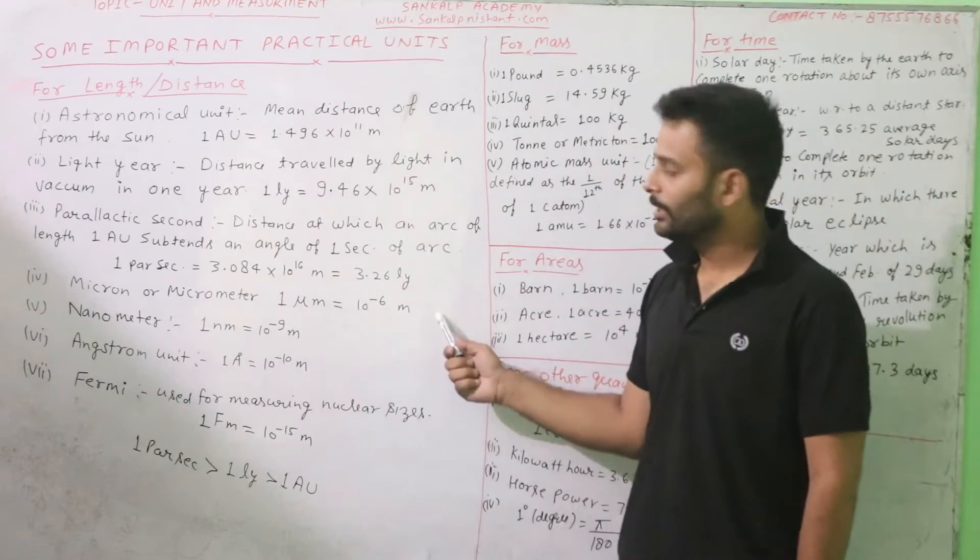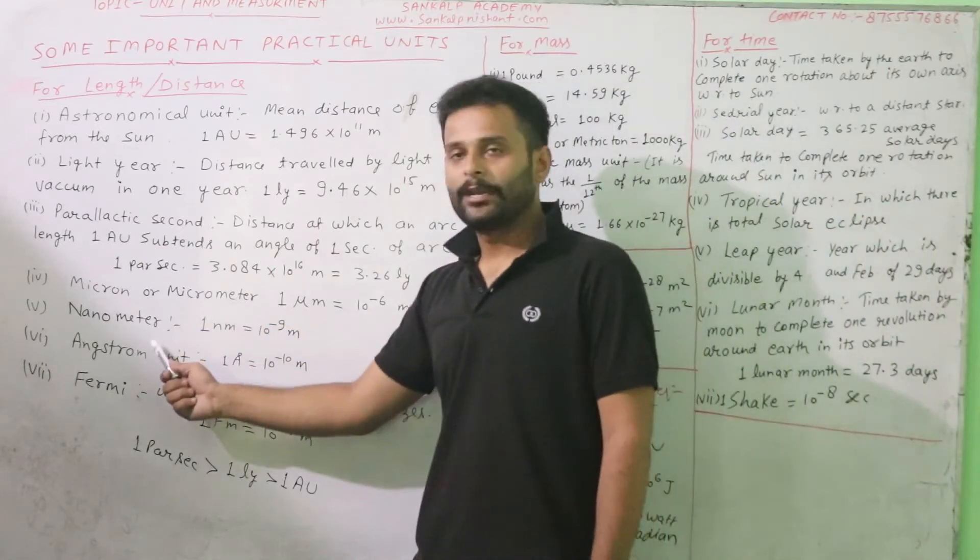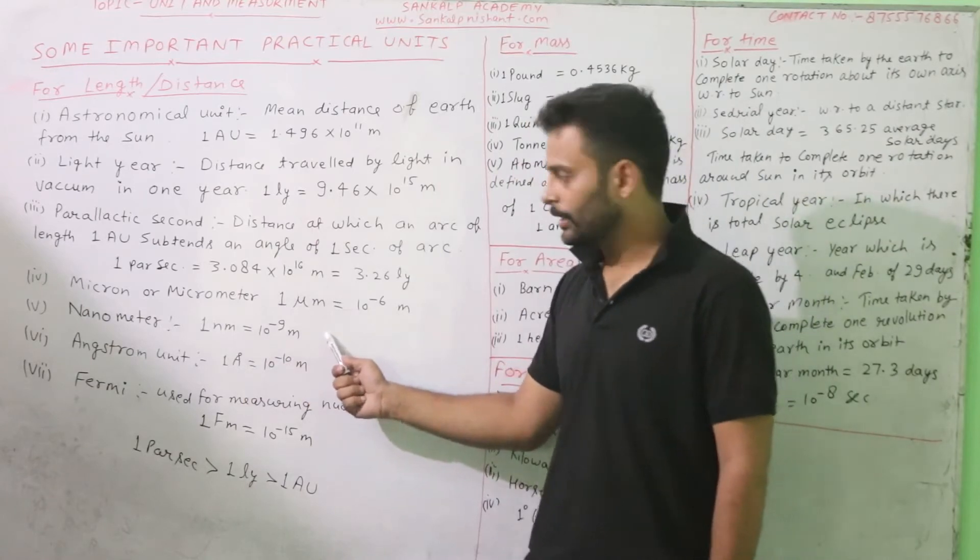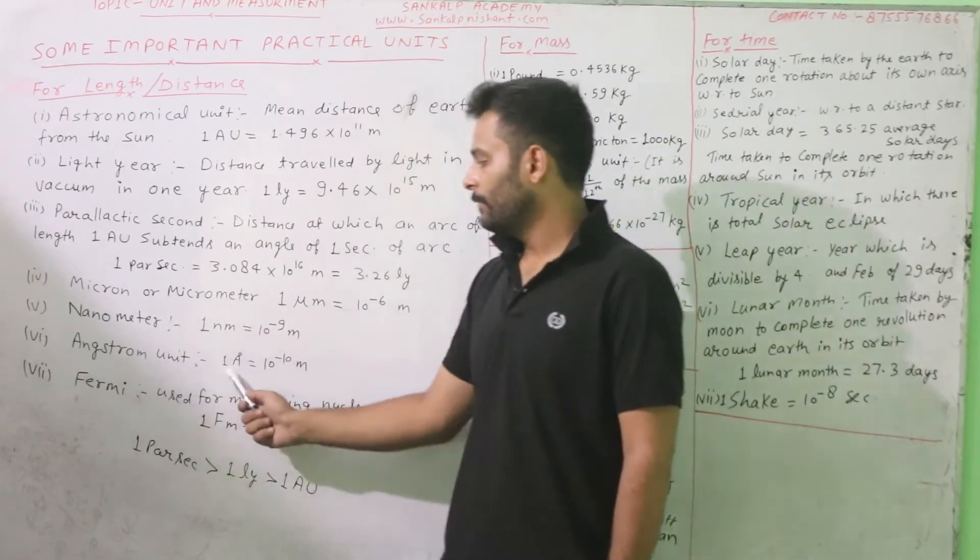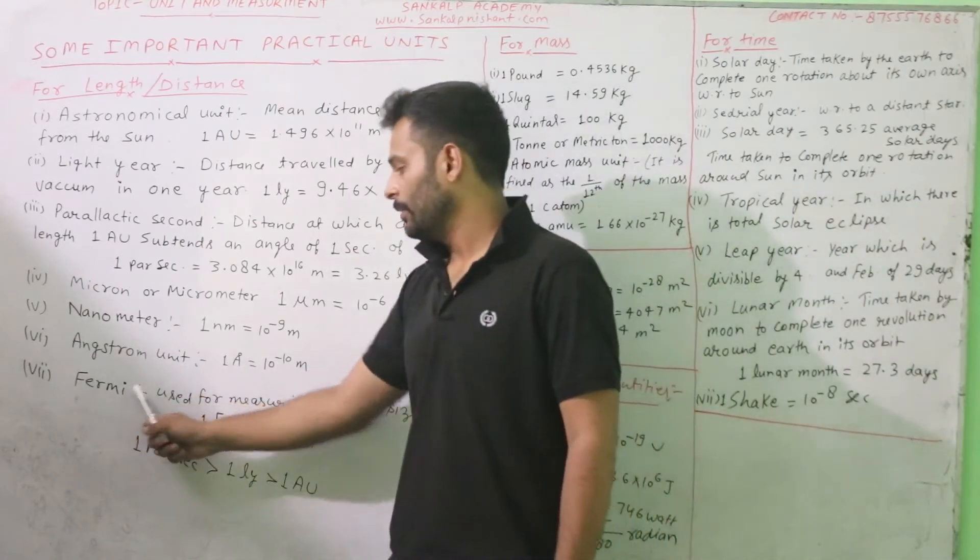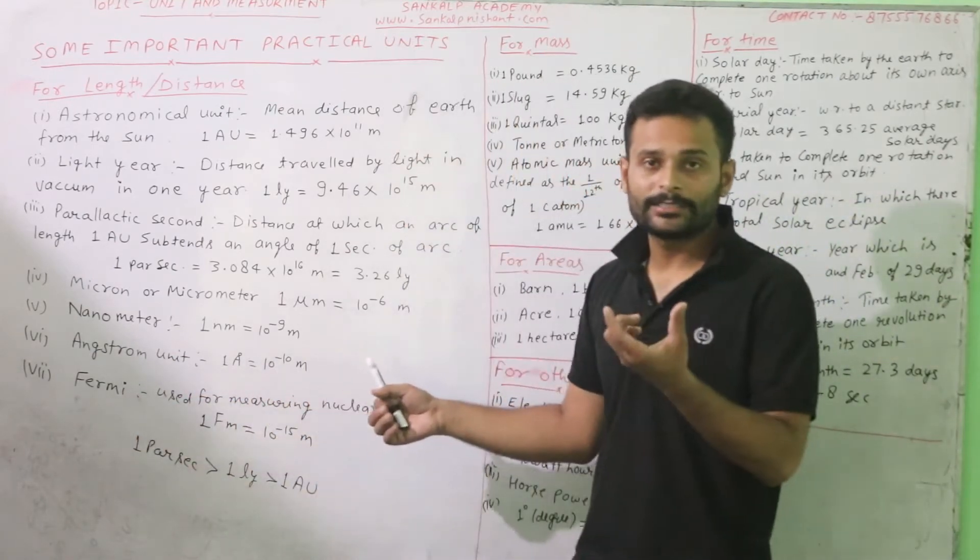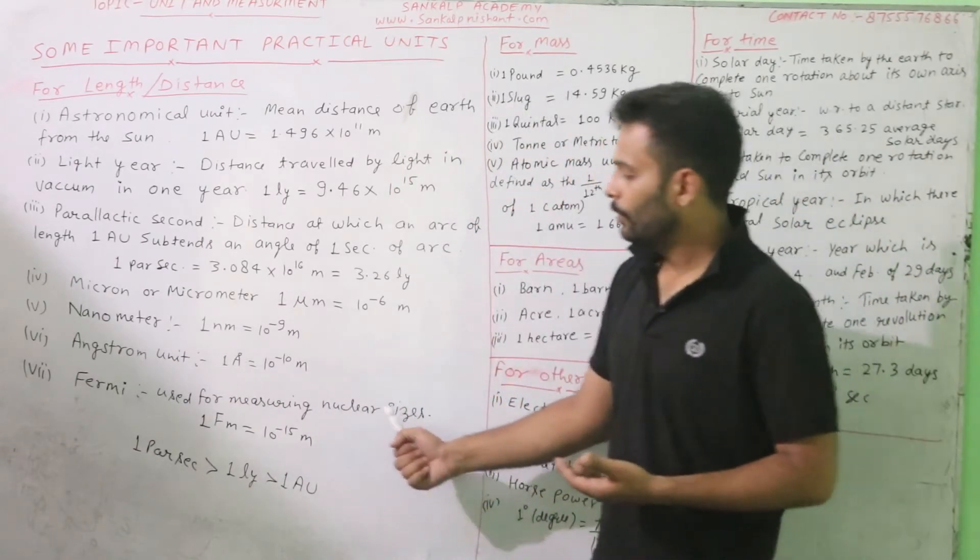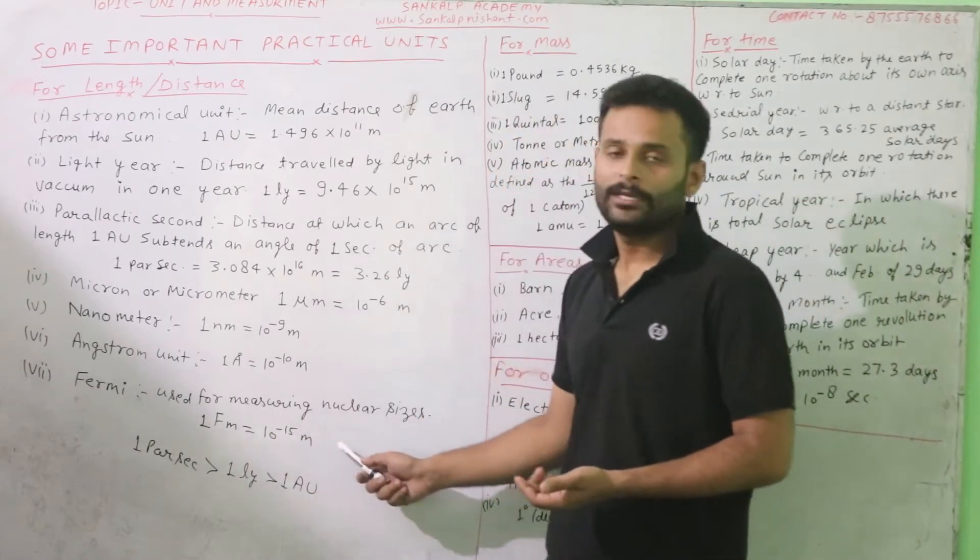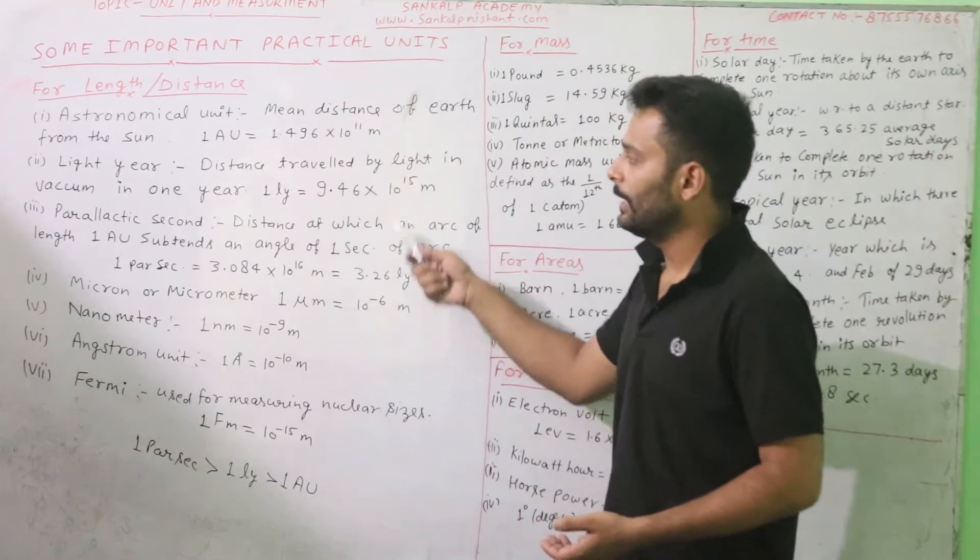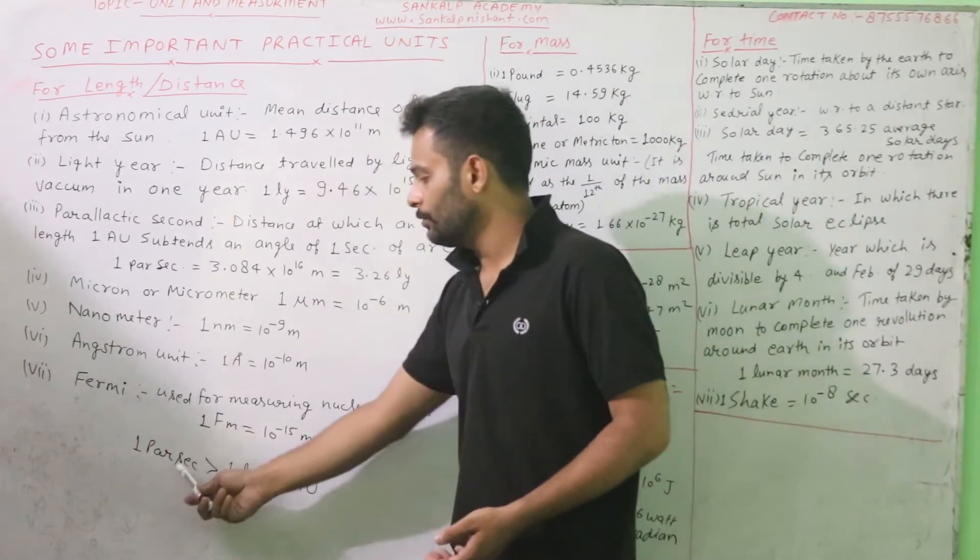Second one is nanometer, one nanometer equals to 10 to the minus 9 meters. The last one is fermi. Fermi, that is nuclear size. And one fermi equals to 10 to the minus 15 meters.